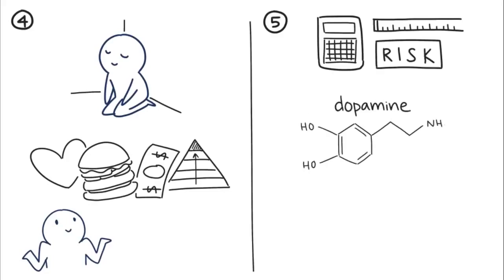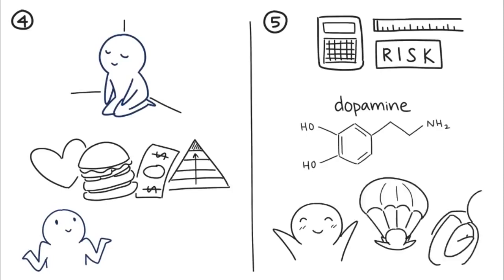Dopamine is a neurotransmitter associated with sensation-seeking, risks, and new adventures. Both introverts and extroverts have the same amount of it, but introverts' brains are less active in the region that generates dopamine.